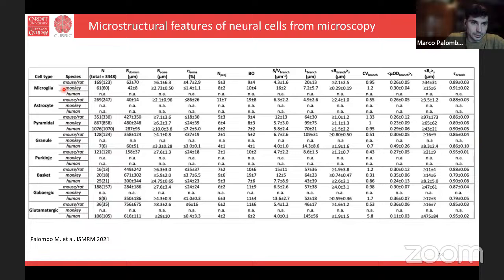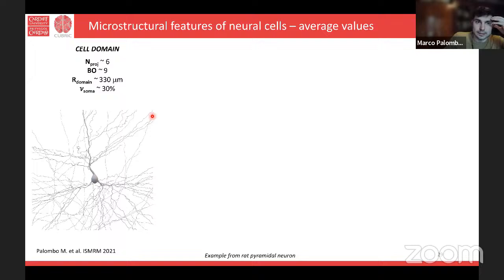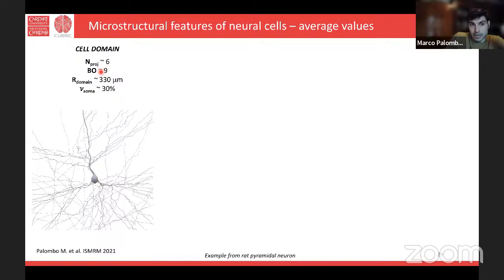A couple of years ago we downloaded 3D reconstructions from over 3000 cells from open-access databases such as Neuromorpho and the Allen Atlas — from eight cell types including glial and neurons, across three species — and dissected these cells to measure their finer features. Overall, cells in the brain are very large, occupying spatial domains of a few hundreds of microns on average. The cell body occupies 30% of the whole cell volume on average. These are very branched structures, with an average branch order of nine, meaning a process branches at least nine times. On average six projections radiate from the soma.